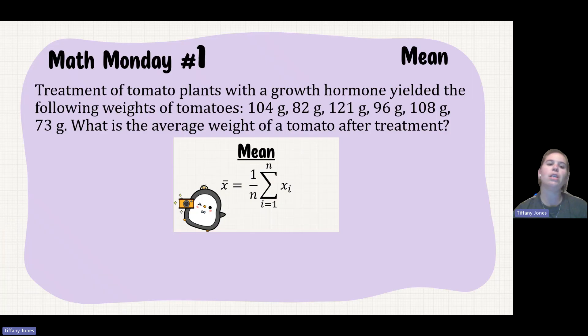Here we see the question: Treatment of tomato plants with a growth hormone yields the following weights of tomatoes: 104, 82, 121, 96, 108, and 73 grams. What is the average weight of the tomato after treatment? I've given you the formula just as a quick reminder.